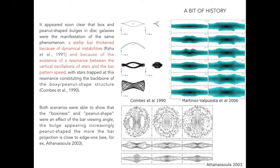We also understood that the boxy or peanut-shape morphology depends on the bar viewing angle. As shown in this plot by Athanassoula 2003, the top row shows a face-on view of three simulations of barred galaxies. The middle and bottom rows show the edge-on morphology when the observer's line of sight is perpendicular to the bar's major axis versus the bar's minor axis.